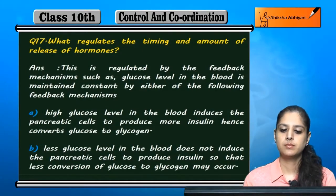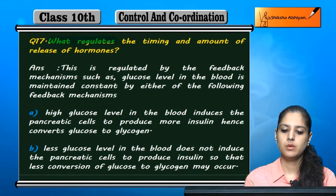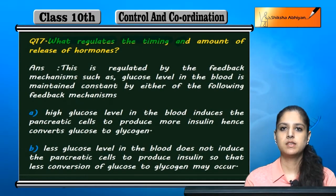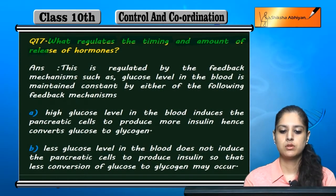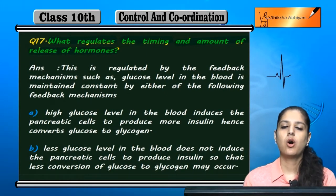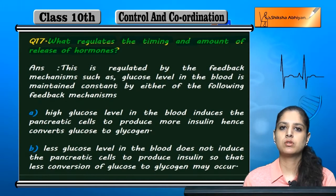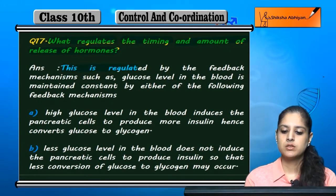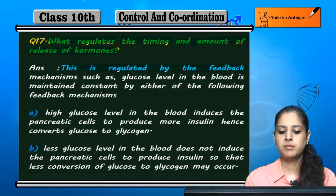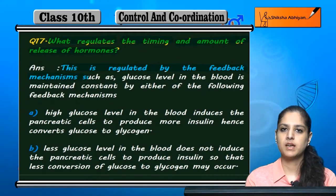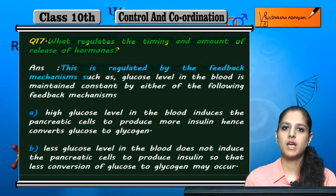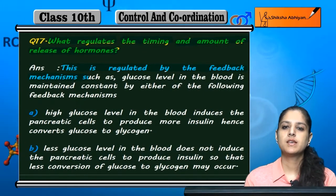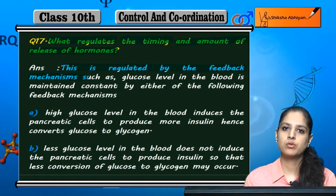Question 17: What regulates the timing and amount of release of hormones? This is regulated by the feedback mechanism. The feedback mechanism determines when a hormone is secreted and how much is secreted.